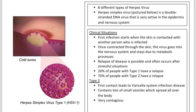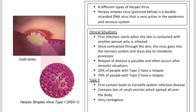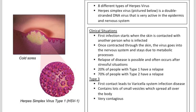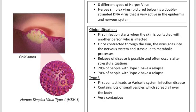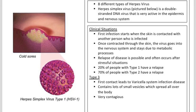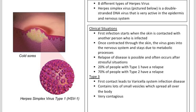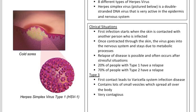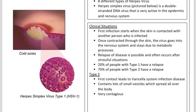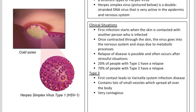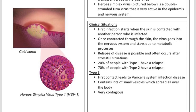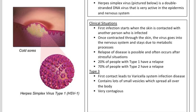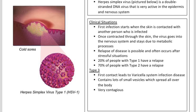Only 20% of people with type 1 herpes virus have a relapse, meanwhile 70% of people with type 2 herpes have a relapse. In type 3, the first contact leads to a varicella systemic infection, which contains a lot of small vesicles that spread all over the body and is extremely contagious.